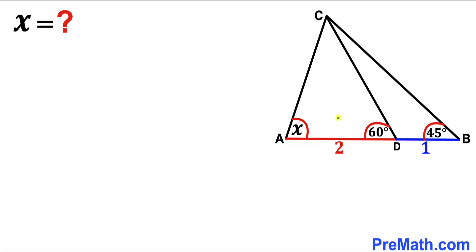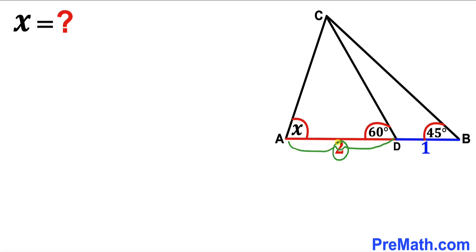Welcome to pre-math. In this video we have triangle ABC along with line CD, such that angle ADC is 60 degrees, angle DBC is 45 degrees, and angle CAD is represented by X degrees. Segment AD is 2 units and segment BD is 1 unit. Our task is to calculate angle X.